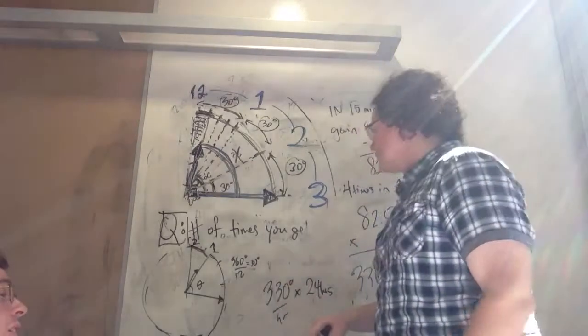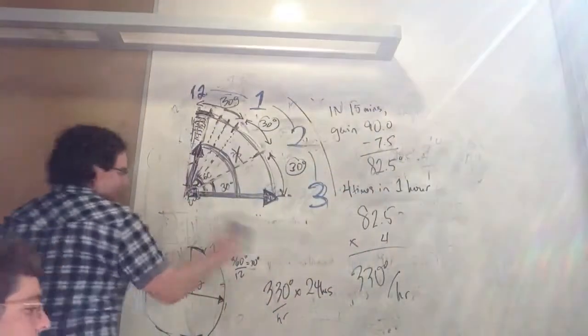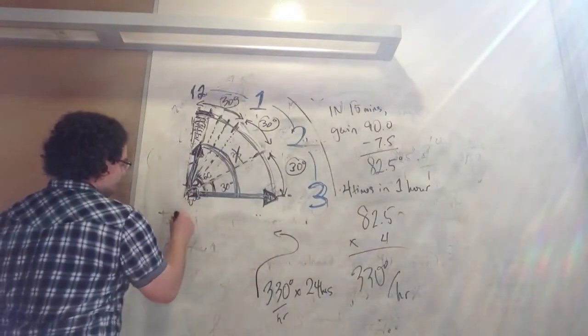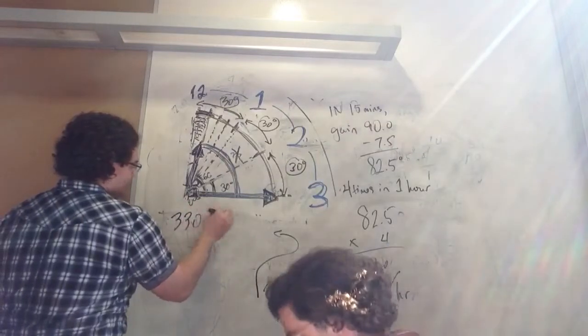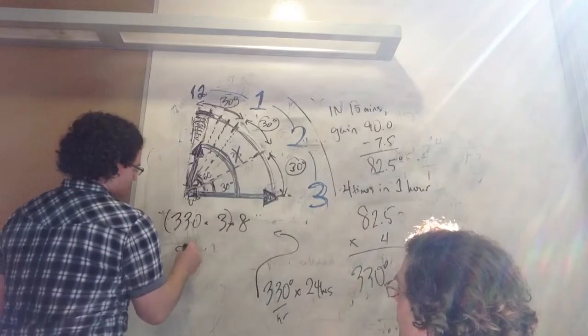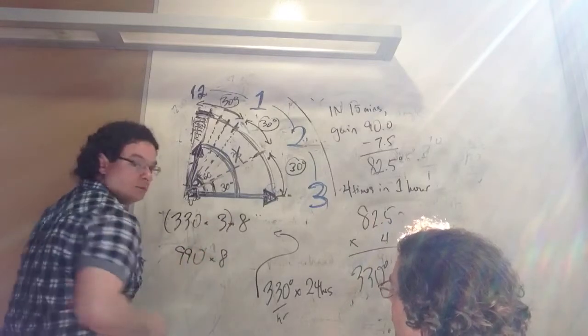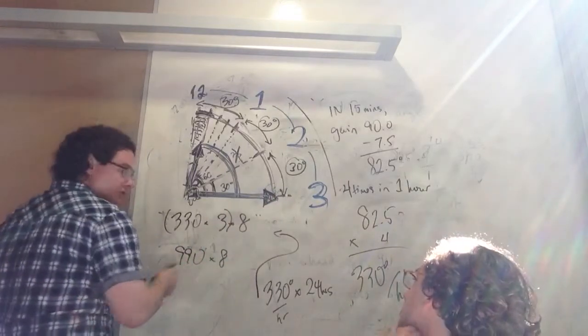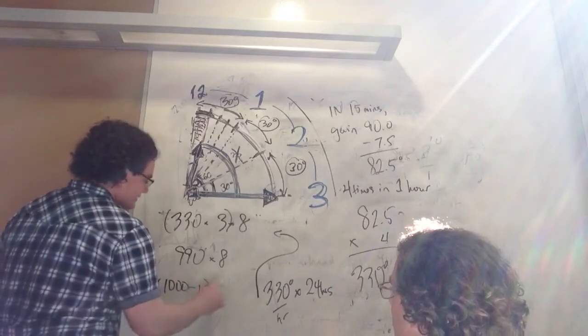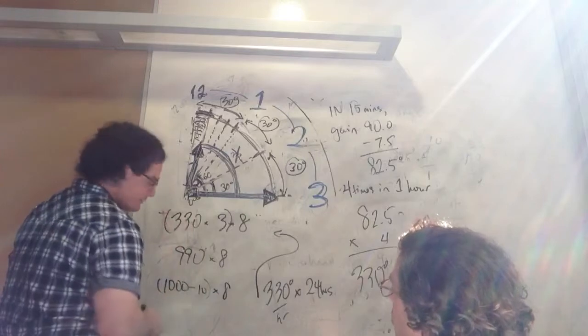We had the very clever, clever and sneaky use of the associative property. 330 times 3 times 8. 990 times 8. You've already astutely pointed out. It was 1000 minus 10, not 1000 minus 100.